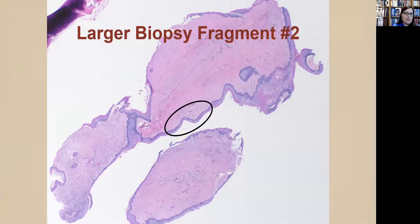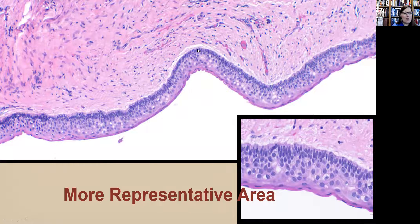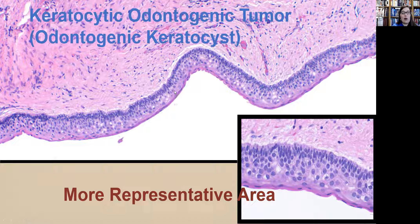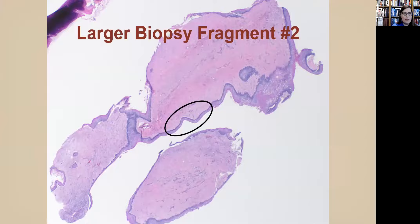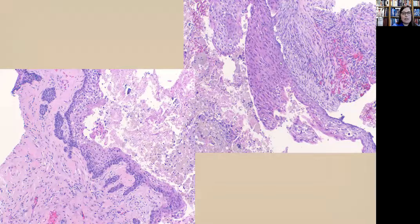Here's the other fragment — and now you probably know the diagnosis. We see separation, a hyperchromatic palisaded basal cell layer, and wavy surface parakeratin. We are dealing with a keratocystic odontogenic tumor (KCOT). The point is that inflammation obscures the features of OKC/KCOT. In retrospect, it is easier to pick up KCOT in the inflamed area, but you need to be aware that inflammation can be a pitfall in your KCOTs.